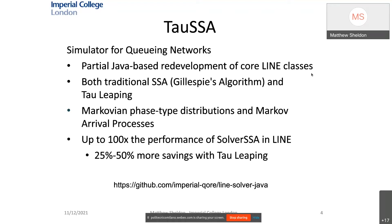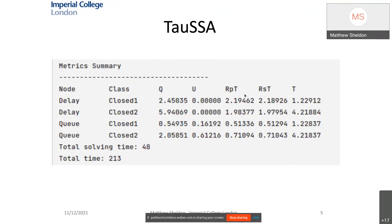There is an additional 25 to 50 times savings using tau leaping. The link to GitHub is shown below. Here's an example of the output, including queue link utilization, response time, residence time, and throughput for a sample closed queuing network with two classes. The simulation time is 48 milliseconds for 10,000 samples.